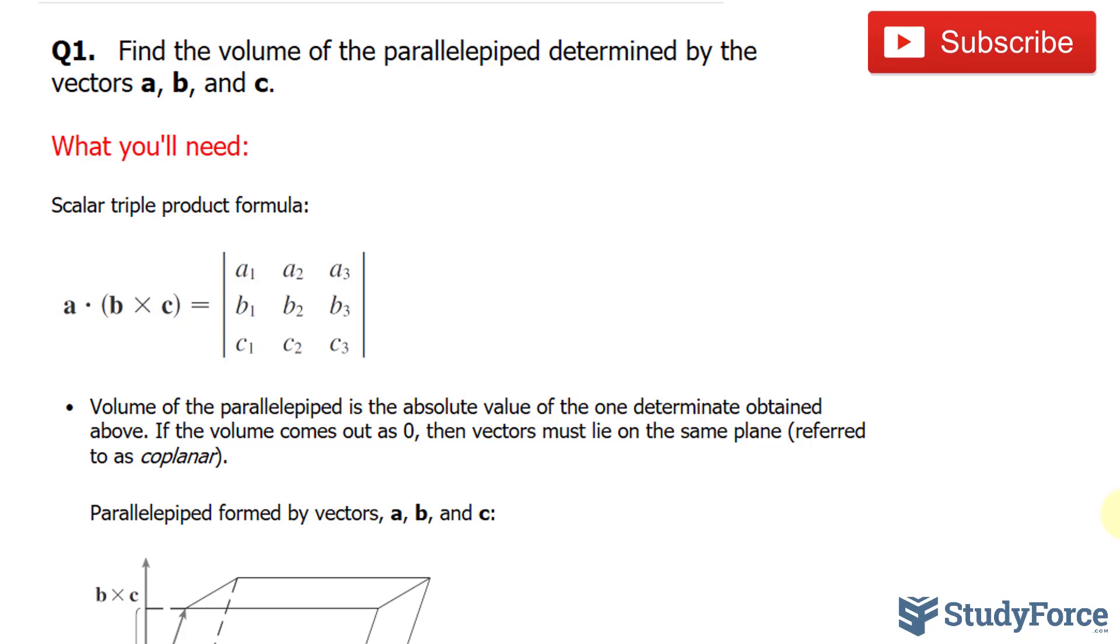So going back to our question, we haven't been given the x, y, and z components of vectors a, b, and c. So let's come up with them. Let's say that vector a has the x, y, and z components of 6, 3, and negative 1. Vector b has the x, y, z components of 0, 1, and 2. And vector c is 4, negative 2, and 5.